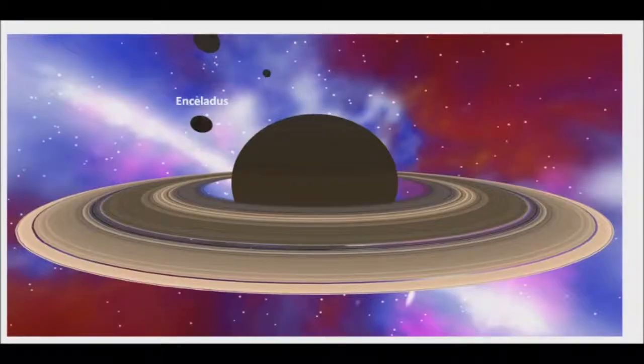Enceladus is a small moon, an ocean world about 310 miles, 500 kilometers across. Its salty subsurface ocean is of interest because of the similarity in pH, salinity, and temperature to Earth's oceans.